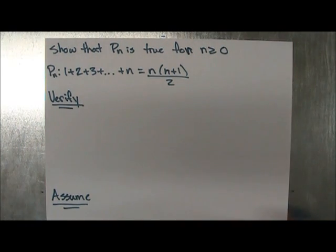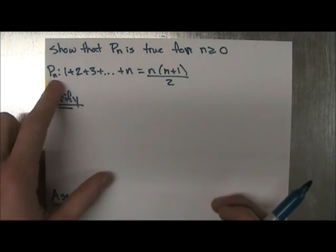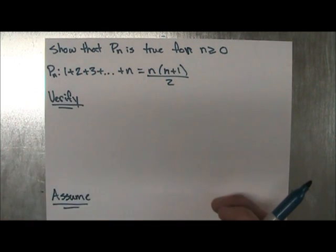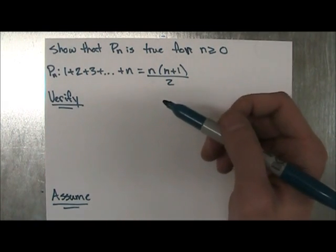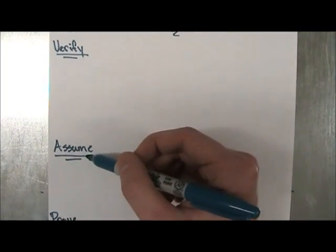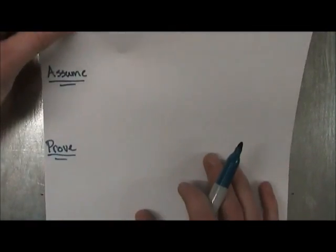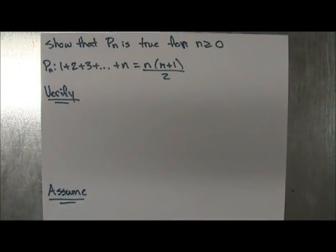So all mathematical induction is, is that it's a way of proving that a mathematical proposition, in our case Pn, or statement, is true in a mathematical way. So every time you do this, there's going to be three steps. You're going to have the first step which you verify, second step you assume, and the third step where you prove that your thing is true.